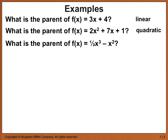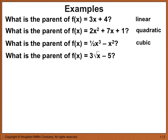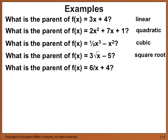What is the parent of f of x equals one-half x cubed minus x squared? It is the cubic function. The degree of this polynomial is 3, and no matter what comes after it — whether it's x squared, x, or a constant — it's still a child of the parent cubic function. What is the parent of f of x equals 3 root x minus 5? The square root function is the parent. What is the parent of f of x equals 6 over x plus 4? It is the reciprocal function — the parent of 6 over x plus 4 is the reciprocal parent function.